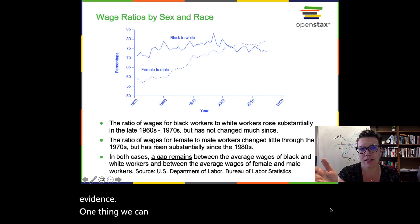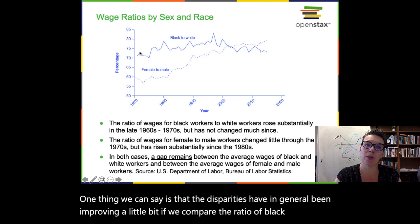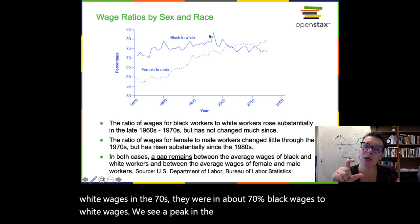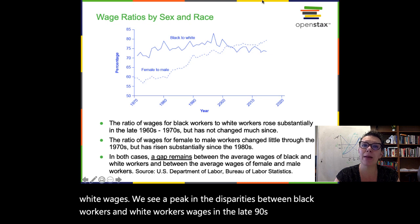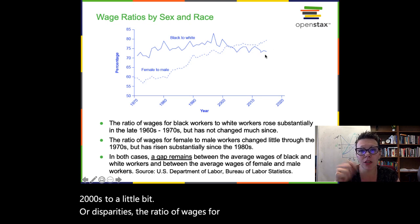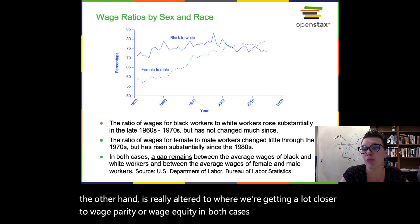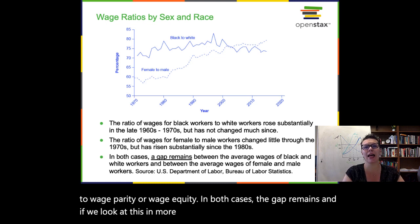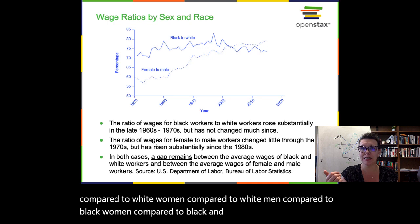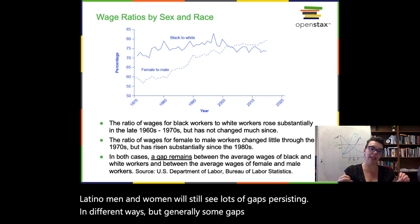Looking at the data, we see pretty interesting evidence, and the disparities have generally been improving a little bit. If we compare the ratio of Black wages to white wages, in the 70s they were about 70%, peaking closer to 82% in the late 90s, but coming back down in the early 2000s. The ratio of wages for female to male workers has really improved to where we're getting a lot closer to wage parity. In both cases, the gap remains — and when we look in more detail at Black women, white women, white men, Black men, and Hispanic men and women, we still see lots of gaps persisting. But some gaps have been shrinking, which is a little bit of good news.